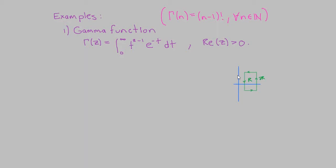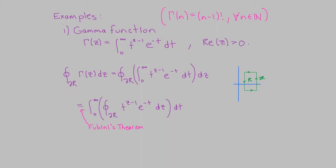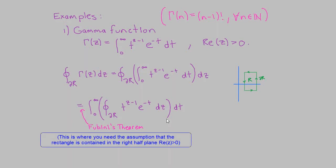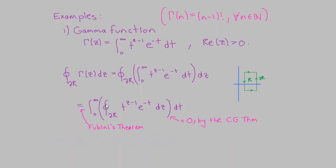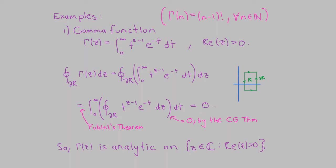Pick any rectangle in the right half-plane (Re(z) > 0) with sides parallel to the axes. We want to show the integral around its boundary is zero. For any real t > 0, the integrand in the gamma function definition is an analytic function of z. If we can interchange the order of integration — which is justified by Fubini's theorem — then the inner integral is zero by Cauchy-Goursat. It follows that the boundary integral of every such rectangle is zero, and by Morera's theorem, the gamma function is analytic for Re(z) > 0.